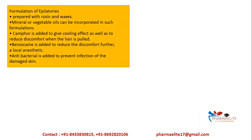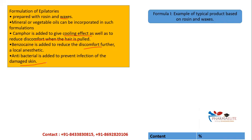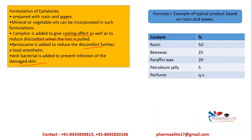For formulation of hair removal products, the main composition is waxes. It is mainly prepared with rosin and wax, and also contains mineral or vegetable oils. Camphor is added to give a cooling effect and reduce discomfort when hair is pulled, since the skin gets stretched. Benzocaine is also added as a local anesthetic to reduce pain. An antibacterial is added to prevent infection to the damaged skin. Key ingredients include rosin, beeswax, paraffin wax, petroleum jelly, and perfume.